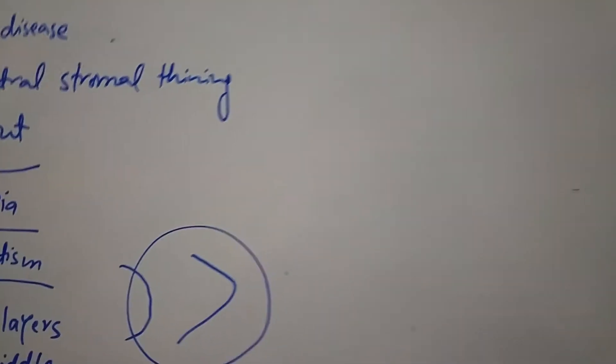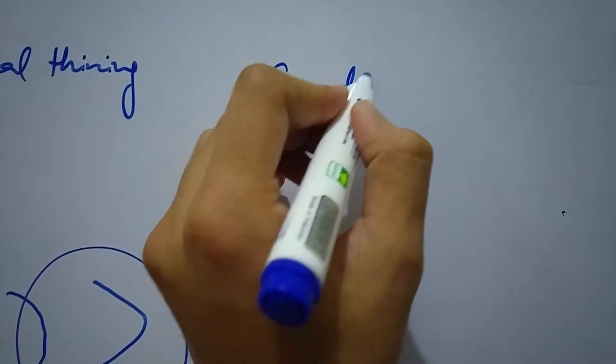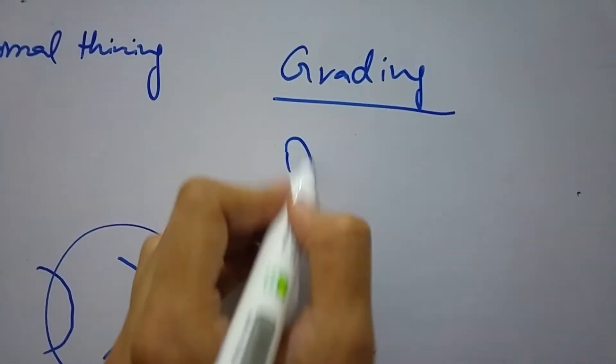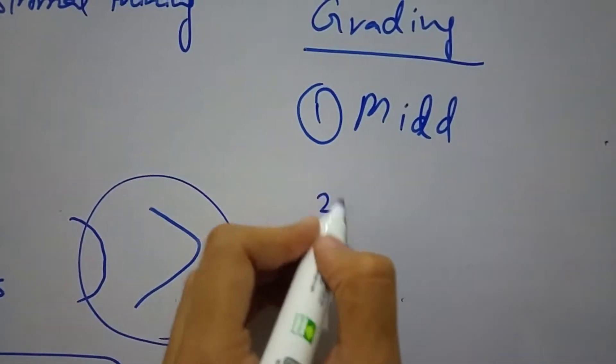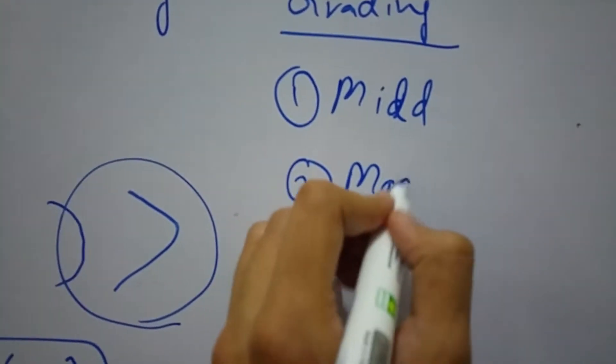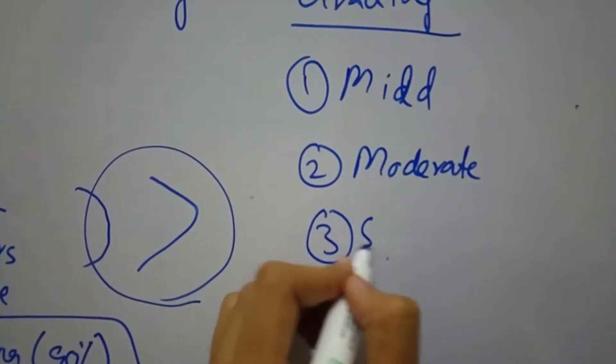We can also grade keratoconus into three different categories: number one is mild, number two is moderate, number three is severe.